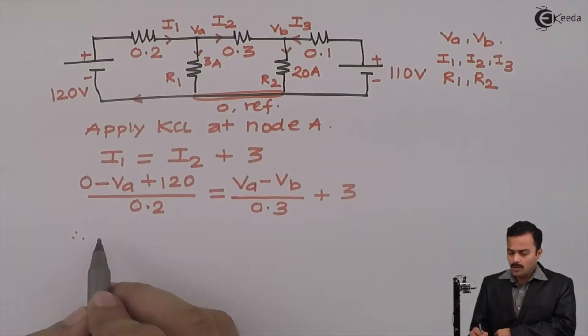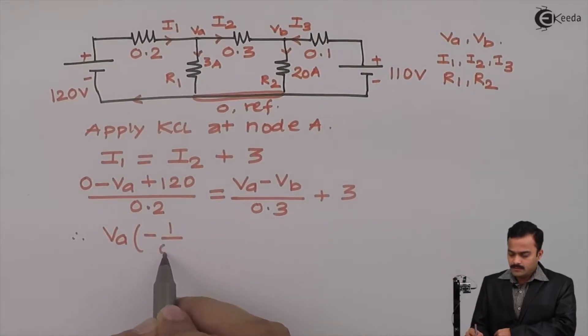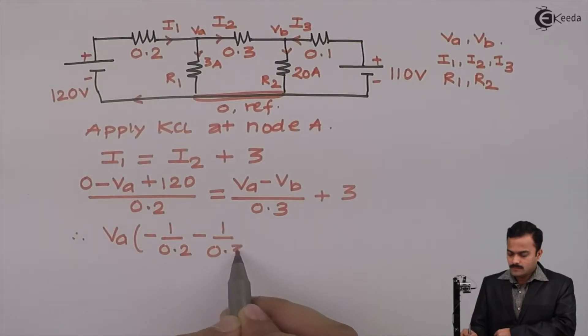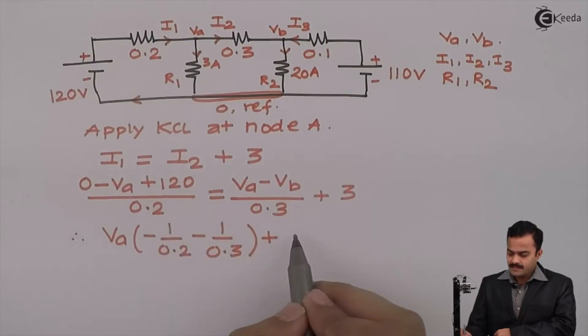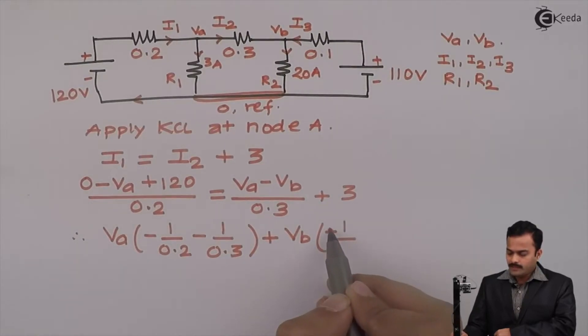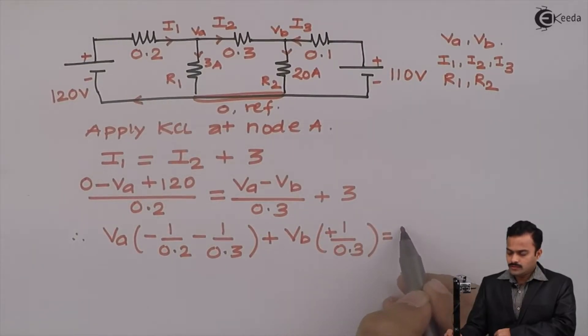So, let's club all Va terms together. I will have Va multiplied by 1 upon minus 0.2 minus 1 upon 0.3. This Vb will come this side. So,